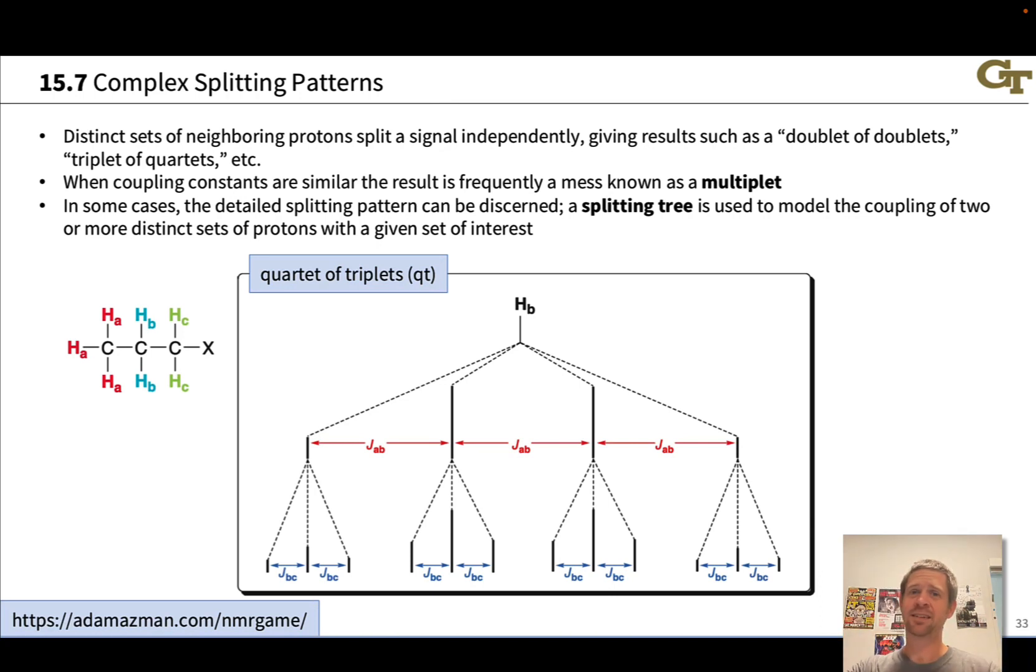When the neighboring protons have similar coupling constants to our protons of interest, we get a ton of overlapping peaks, and that resulting mess is known as a multiplet. In some cases though, particularly if the coupling constants are very different, we actually can discern splitting patterns. We can use a graphical device known as a splitting tree to model these splitting patterns.